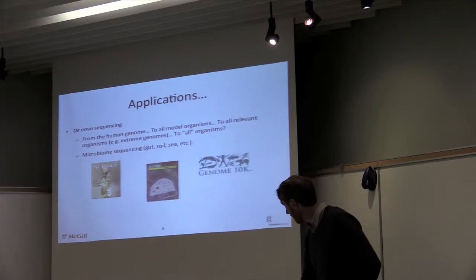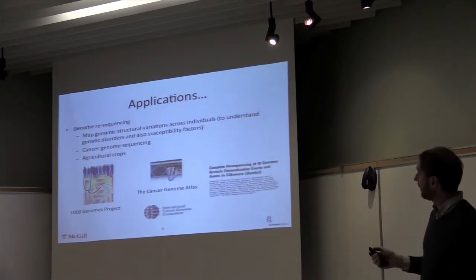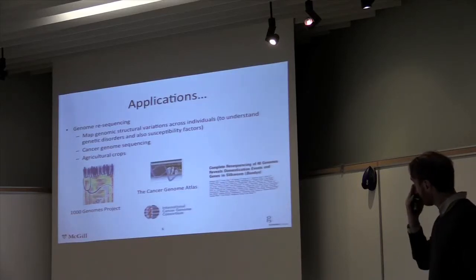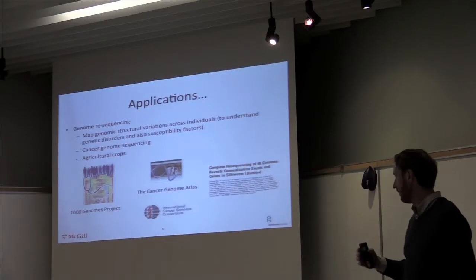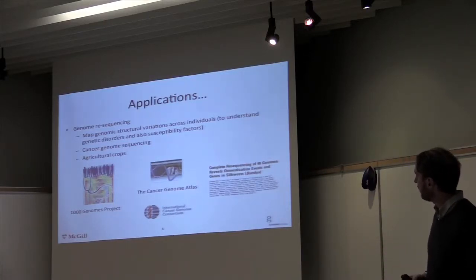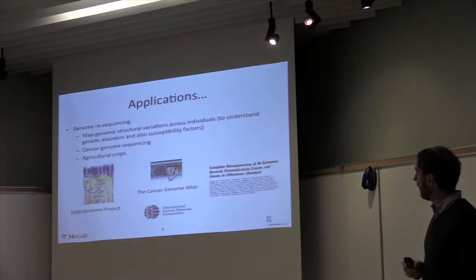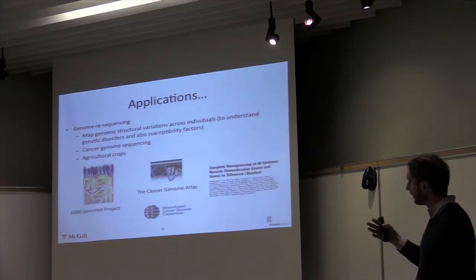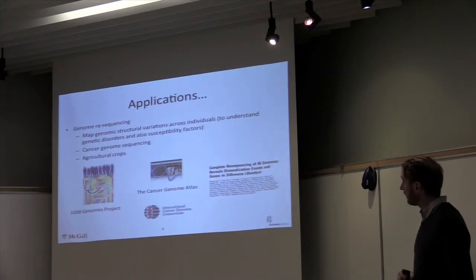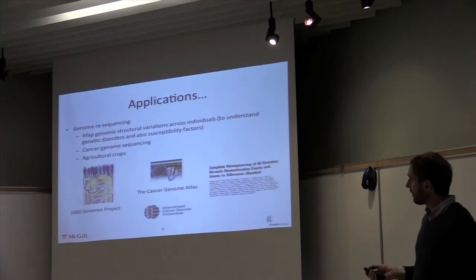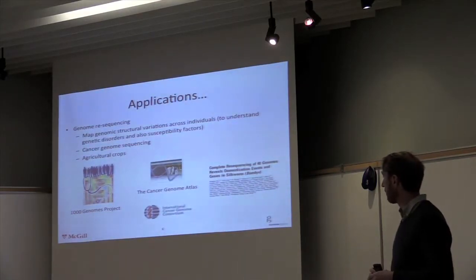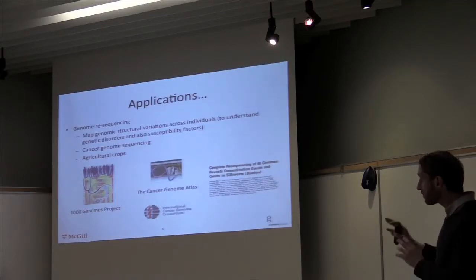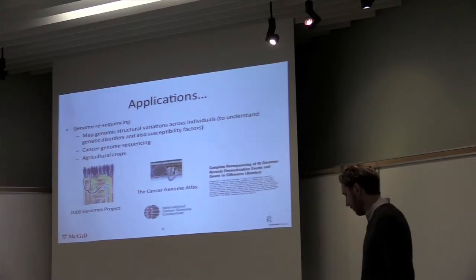I won't be talking about de novo sequencing applications today. The other big category, which is keeping places like the Innovation Center busy, is really re-sequencing projects — including the ICGC project based here — where we're interested in cataloging the variability between individuals both in health and disease, to understand the impact of genetic variants in various contexts. This is true both for human applications, but also in other areas including agriculture and studying different crops. Right now, that's one of the very big areas in terms of major investment.